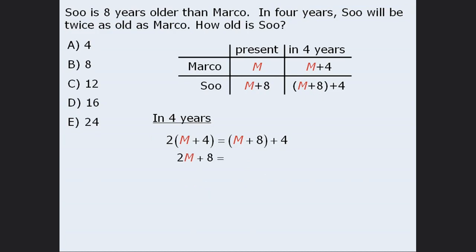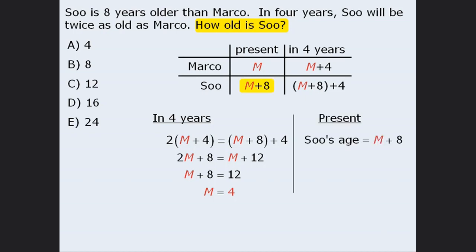From here, we'll expand the left-hand side and simplify the right-hand side. Then, if we subtract M from both sides and subtract 8 from both sides, we get M equals 4. Now the question asks us to find Sue's present age, and earlier we said her age equals M plus 8. So if M equals 4, we replace M with 4 to see that Sue is presently 12 years old, so the correct answer is C.